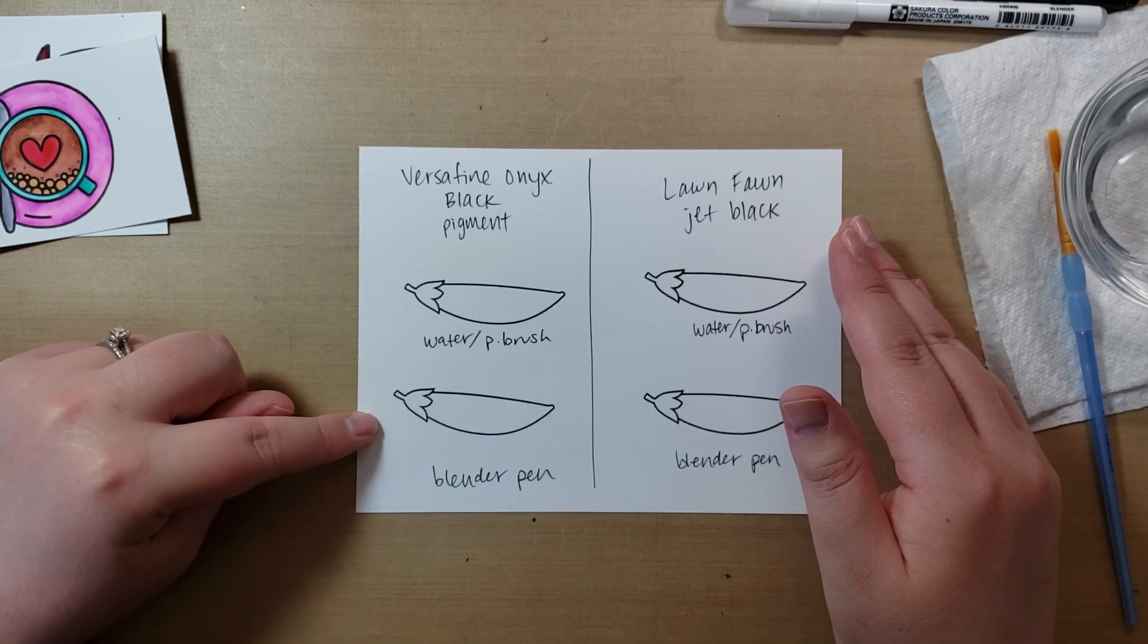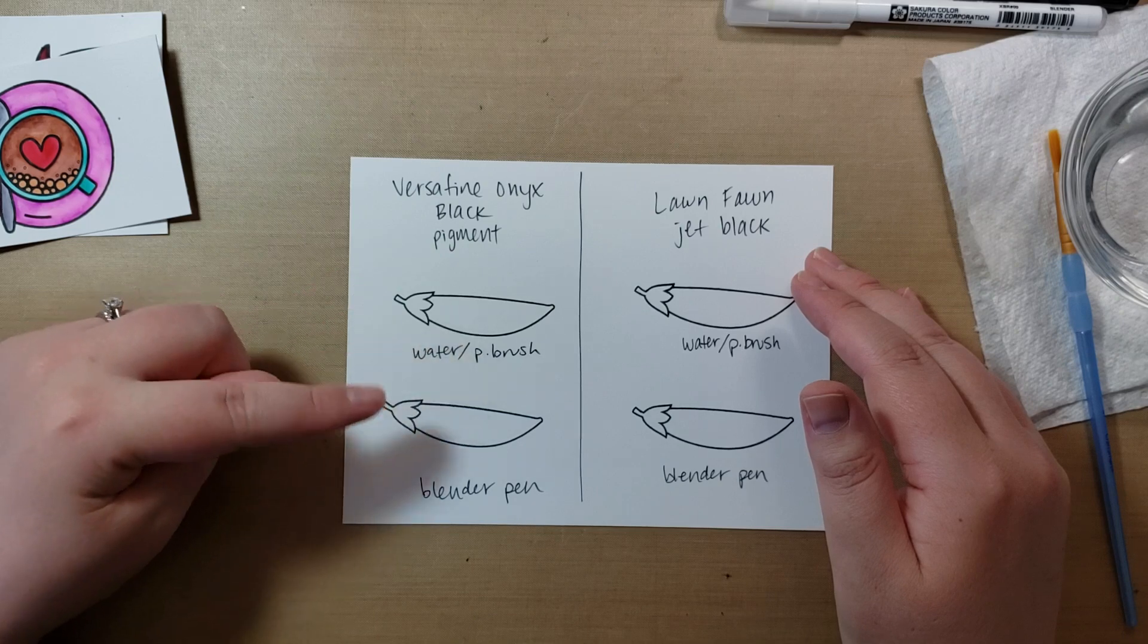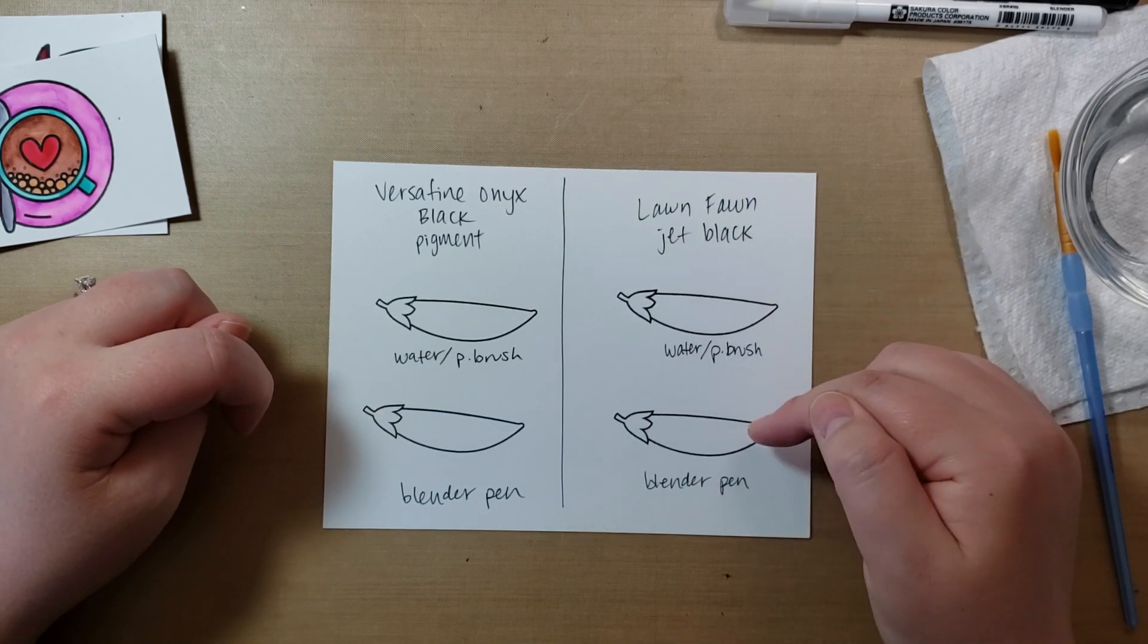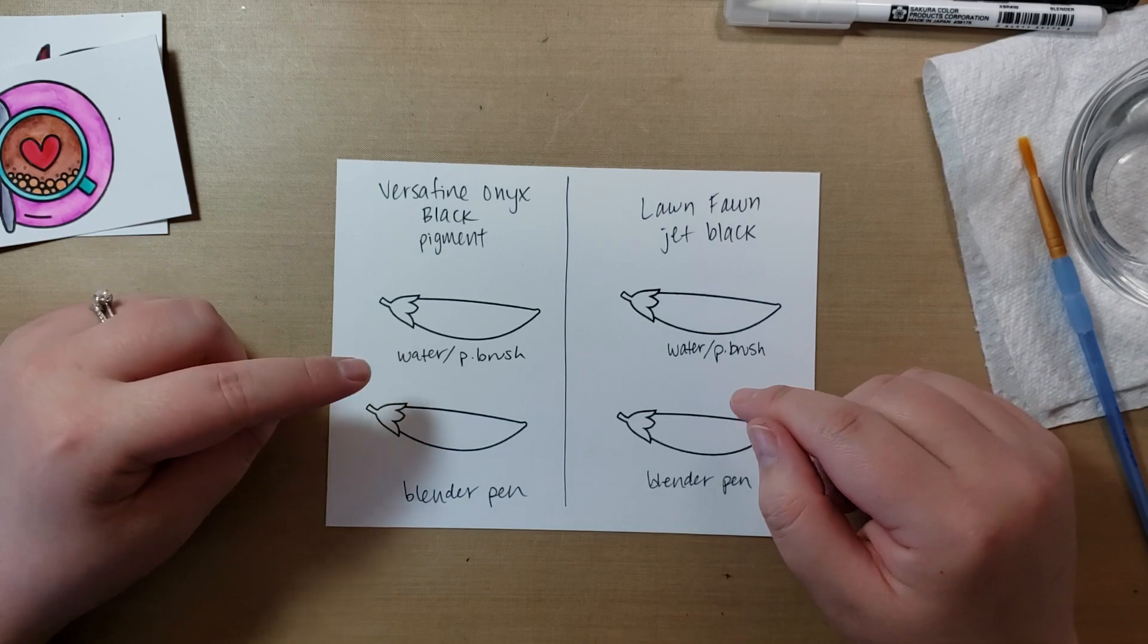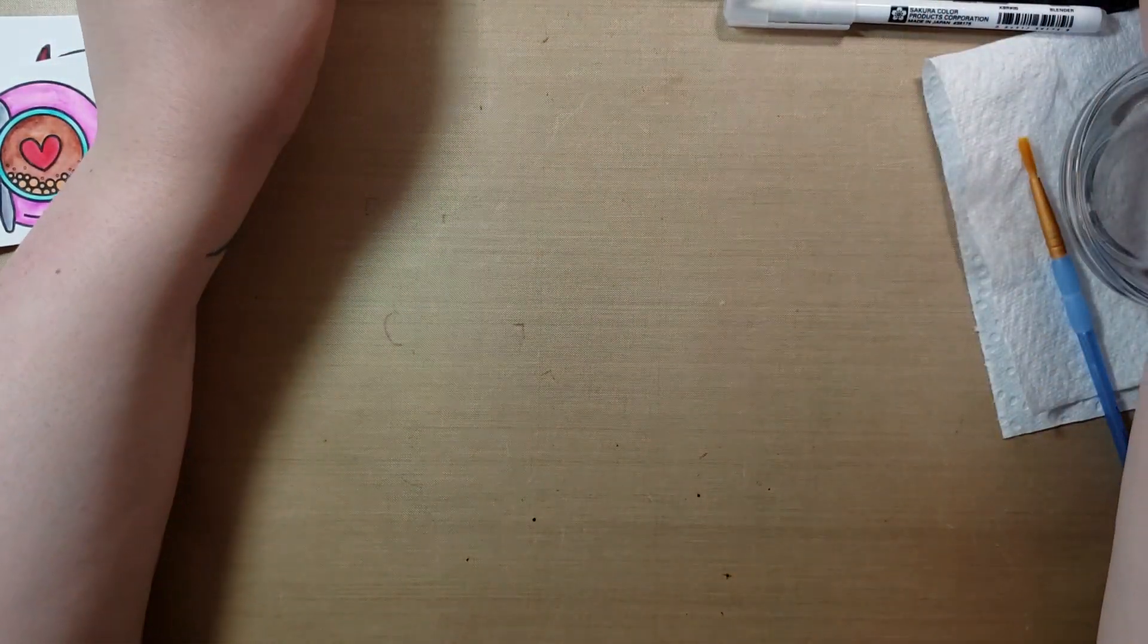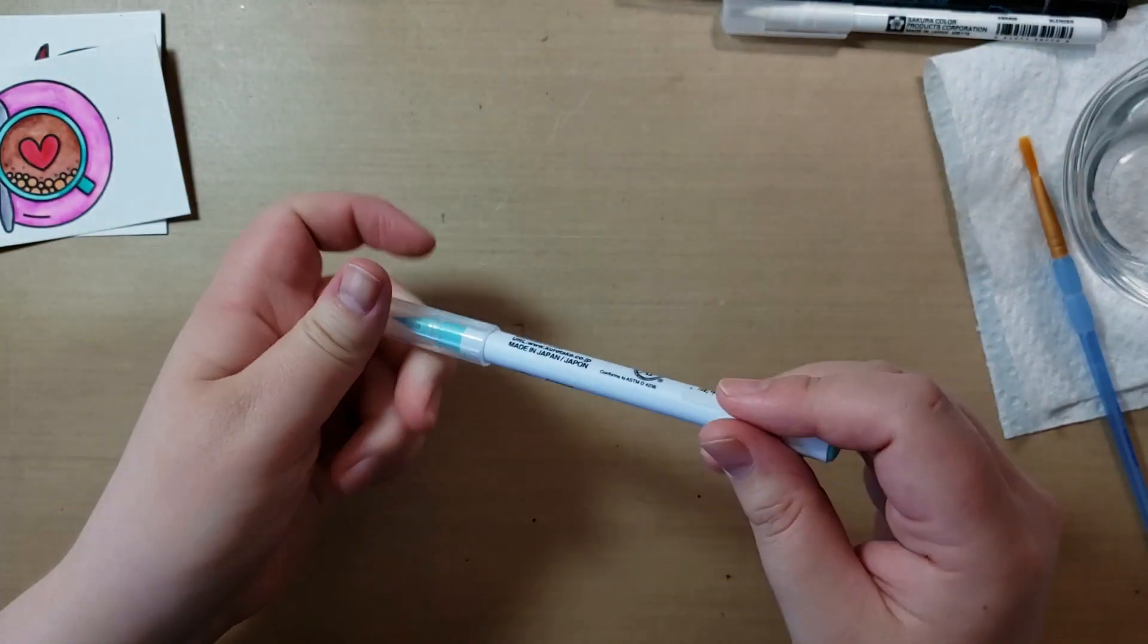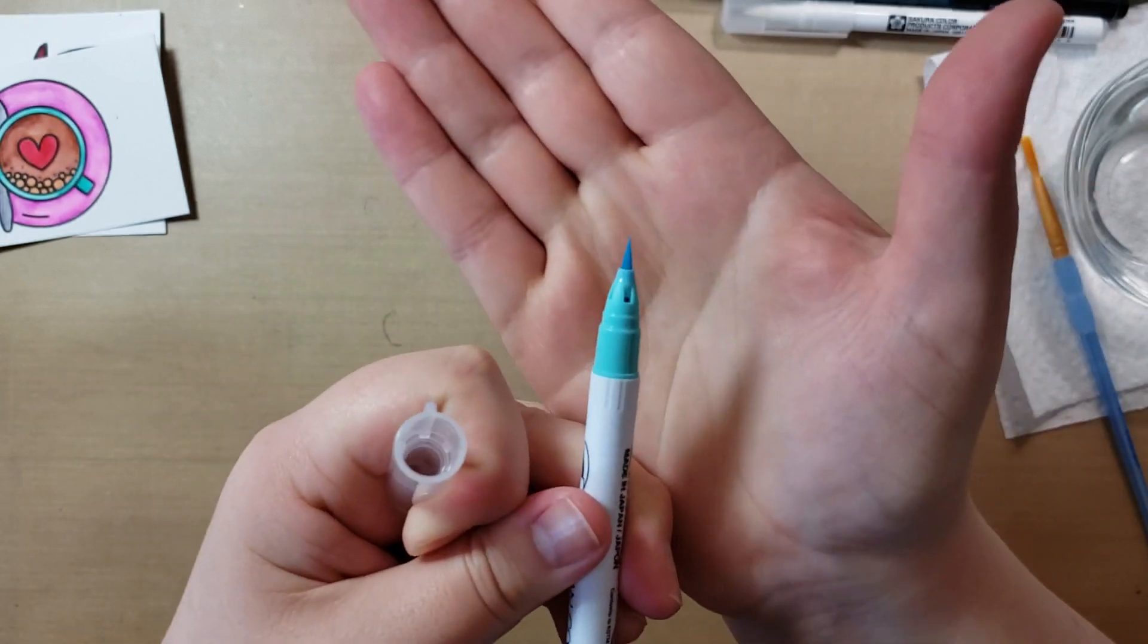I'm just going to try not to touch these images. This is a little pea pod from Lawn Fawn Be Happy set. I'll try not to touch these while I do them in case this is still wet. I know this is dry, because this is drying, so that's good. So first, before I do this, I want to go over the differences. So I'm just going to take one of my loose Zig Clean Color. I really like the brush.